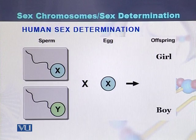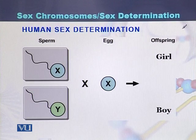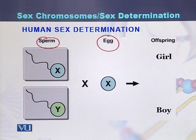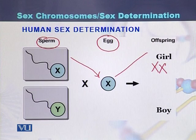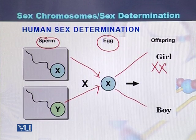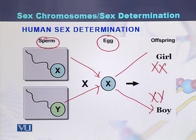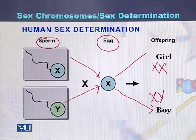We can understand from this diagram how human sex is determined. The male has X-bearing and Y-bearing sperms, while the female has X eggs. When an X sperm fertilizes the egg, two X chromosomes are present and a girl will be produced. When a Y sperm fertilizes the egg, an XY combination results and a boy will be produced. So sex determination in humans is due to the type of sperm from the male.